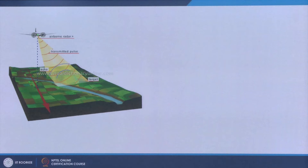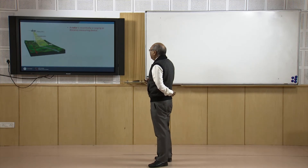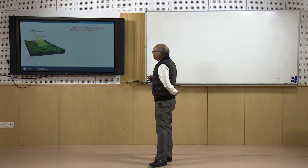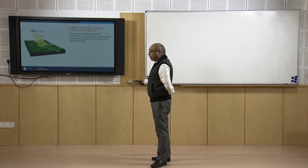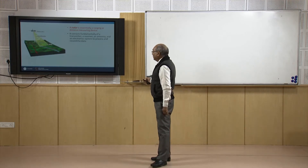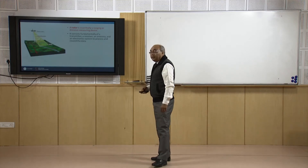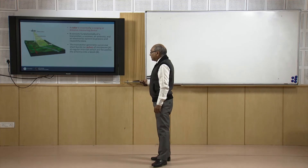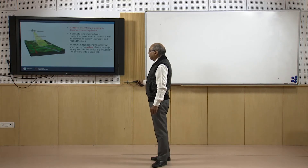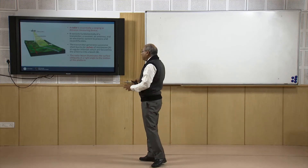Radar is essentially a ranging or distance-measuring device. It consists fundamentally of a transmitter — which must have its own illumination source — a receiver, an antenna, and an electronic system to process and record data. The transmitter generates successive short bursts or pulses of microwave at regular intervals, which are focused by the antenna into a beam, and this radar beam illuminates the surface.